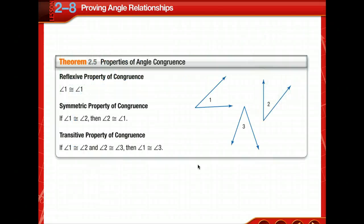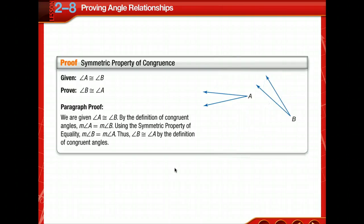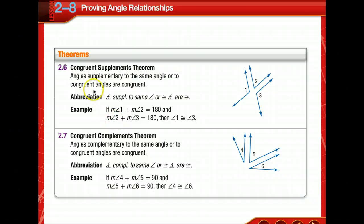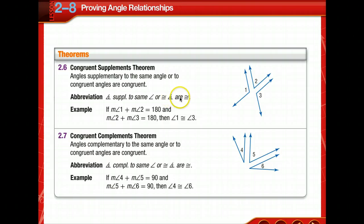Now copy the properties of angle congruence and the symmetric property of congruence into your notes. Also add the congruent supplements and congruent complements theorems to your theorems page. You abbreviate using an angle symbol with an S inside. Angles supplementary to the same angle or to congruent angles are congruent. Angles complementary to the same angle or to congruent angles are congruent. These can be used as reasons in your proofs.